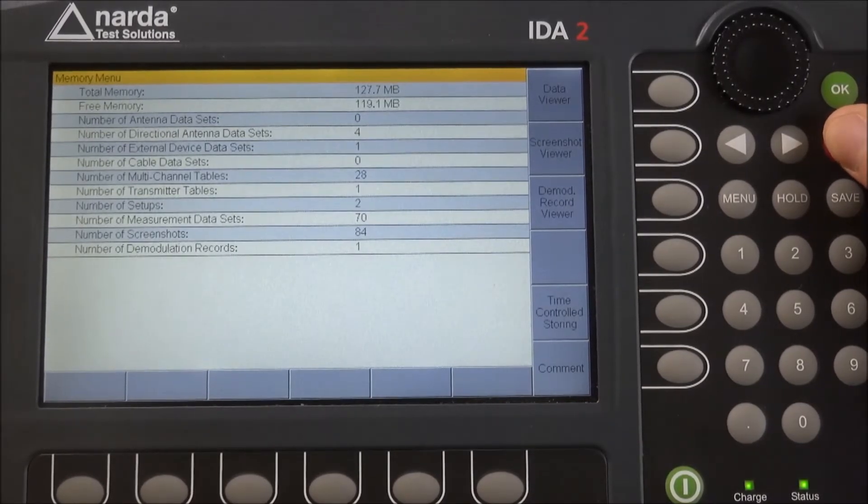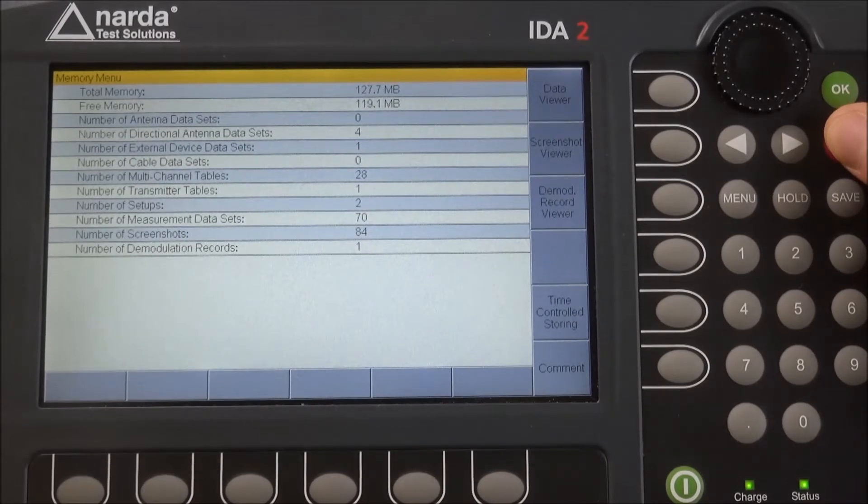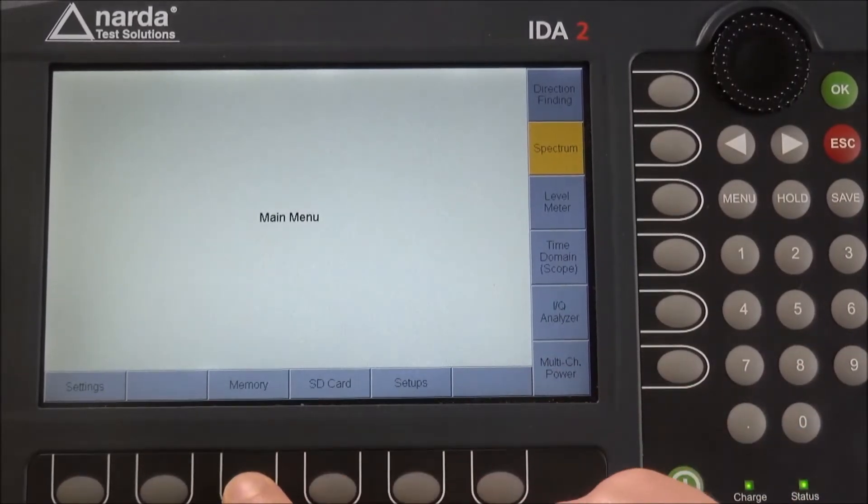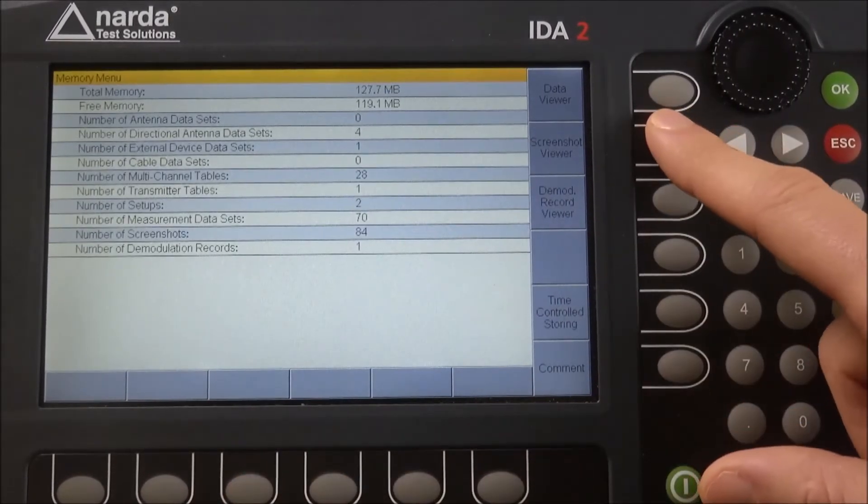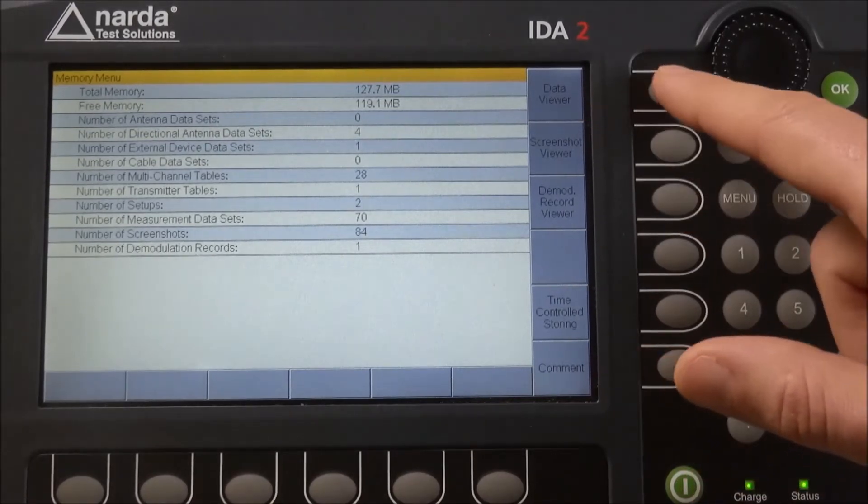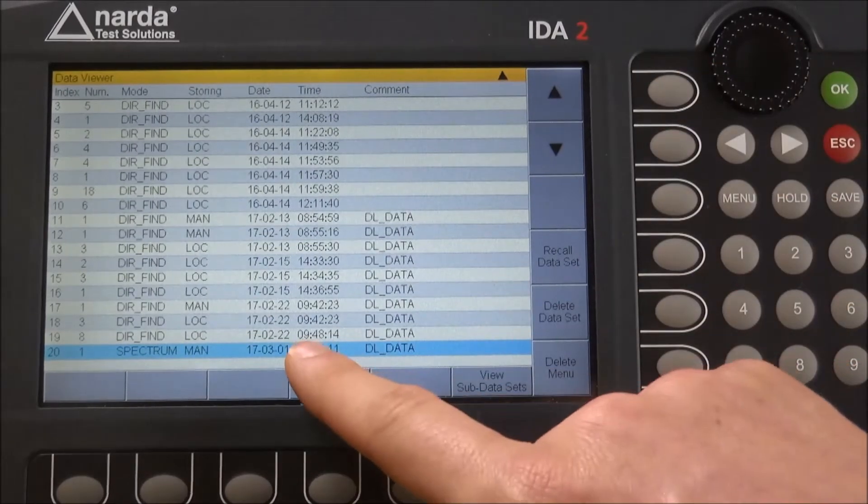In order to access the saved data, we again have to go to the menu memory dialog. From here, you don't click on screenshot viewer, but you click on data viewer.